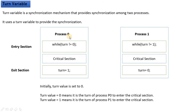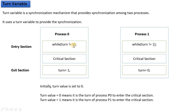If Process 0 has executed its critical section and set the turn value, but Process 1 is slow or slower, control passes to Process 1. If Process 0 wants to go back and execute again but the turn value is not set, starvation could be a concern. However, starvation will not occur because there are two processes in a race condition.